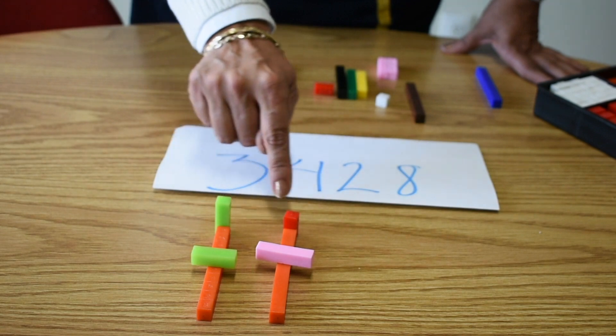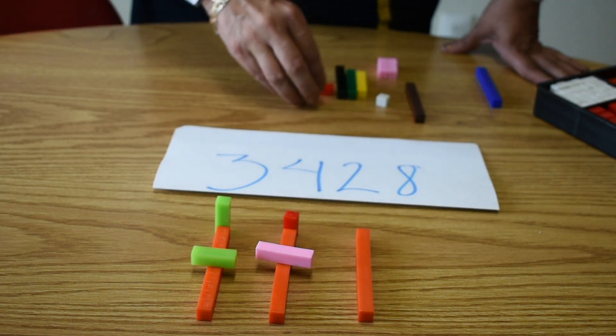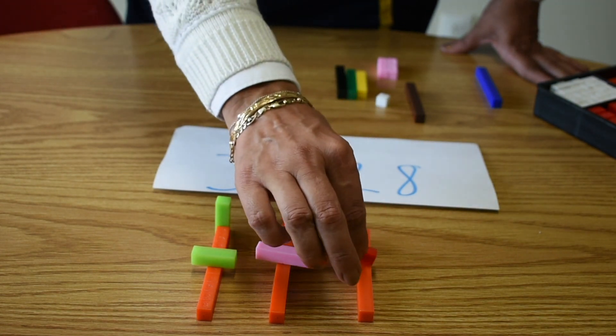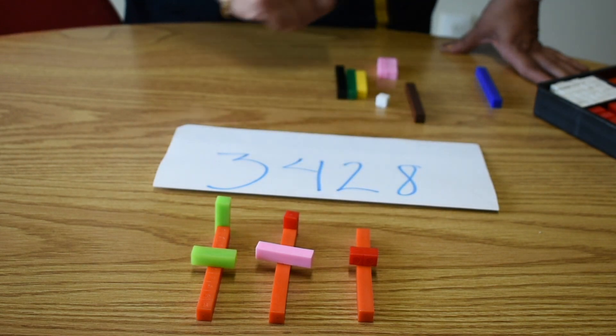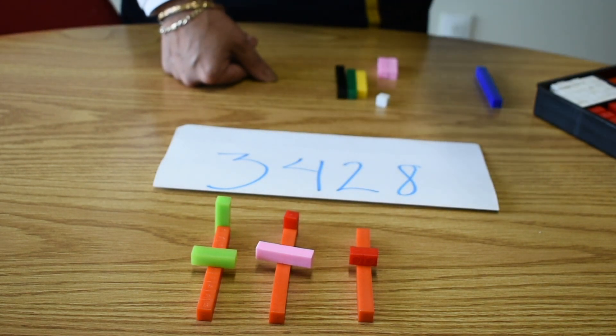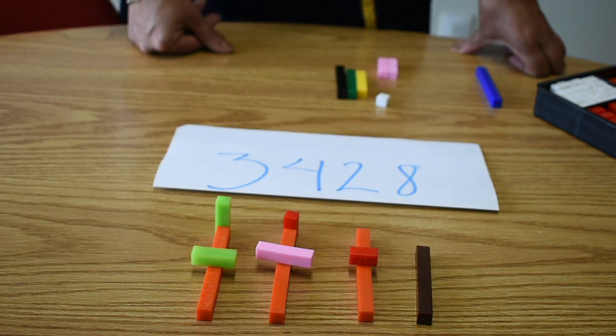Now, we have here 3,400. 10, 20, 20 is 10. Multiply by 2, this is 20. 3,420. And 8, with a brown one. Very good. Thank you.